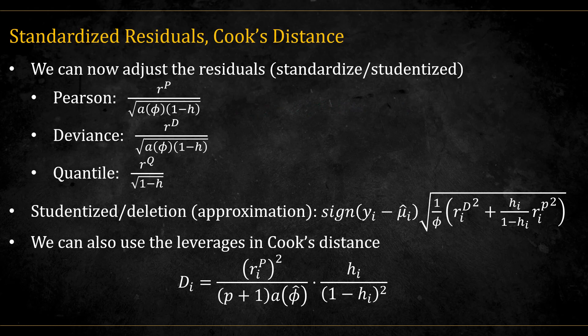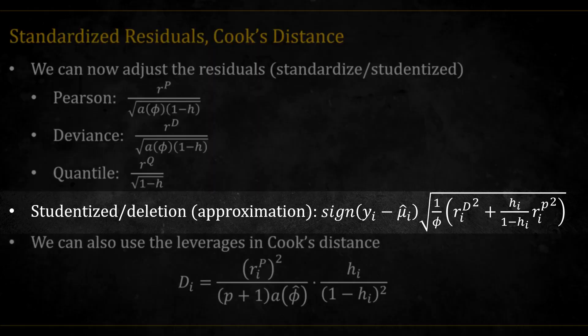Using the leverages, we can adjust the GLM residuals. We divide by the square root of 1 minus H, also multiplied by the estimated a(ϕ). Here we see it for the Pearson and the deviance residuals. For the quantile, we don't need a(ϕ), because the quantile residuals are already adjusted to be of the standard normal distribution, such that they have a variance of 1. There is also an approximation for the deletion version, which is given by this thing over here. I won't go into this.